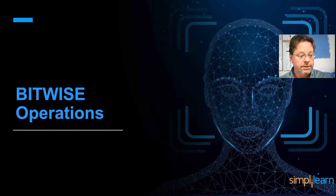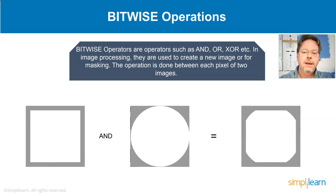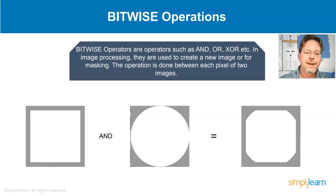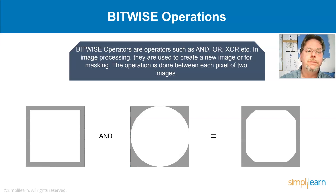There are also Bitwise operations: AND, OR, XOR, etc. in image processing. They are used to create a new image or for masking. The operation is done between each pixel of two images. For example, with AND, only where both images have white pixels does the output image show white — so where the content exists in both images, it equals a new image with just those white parts.